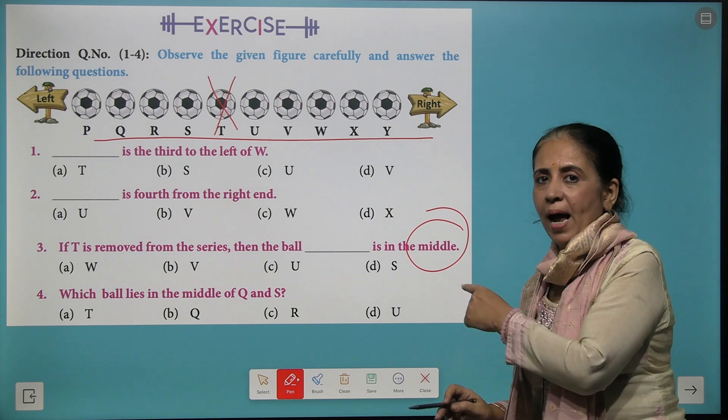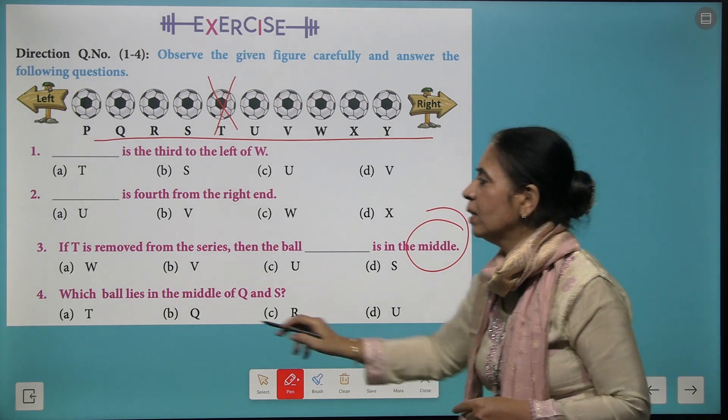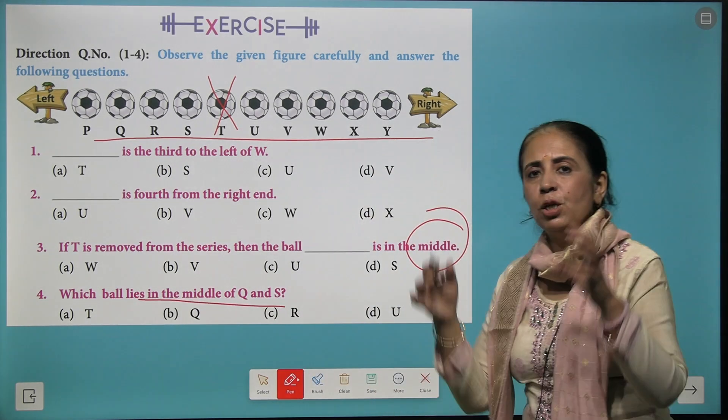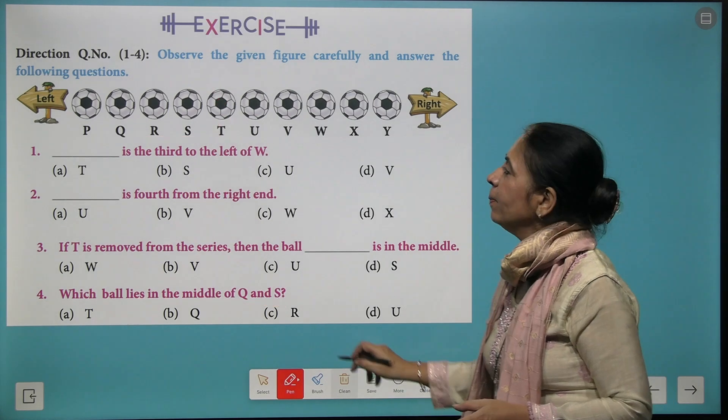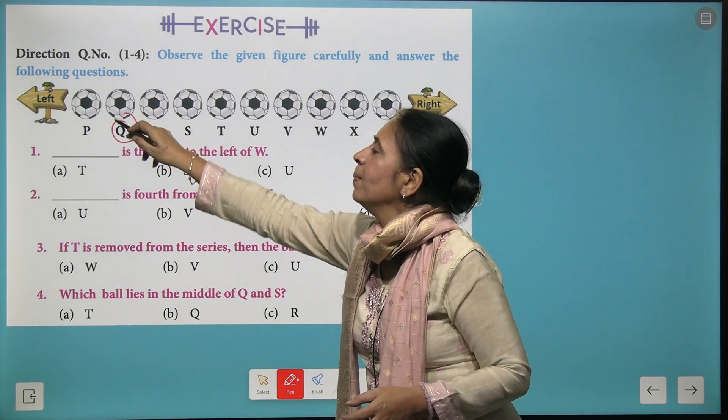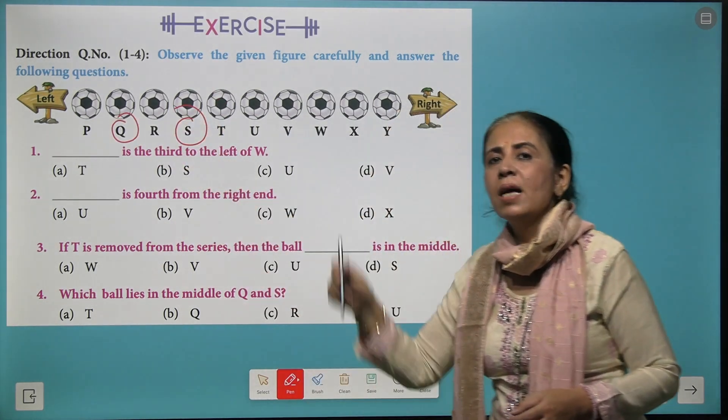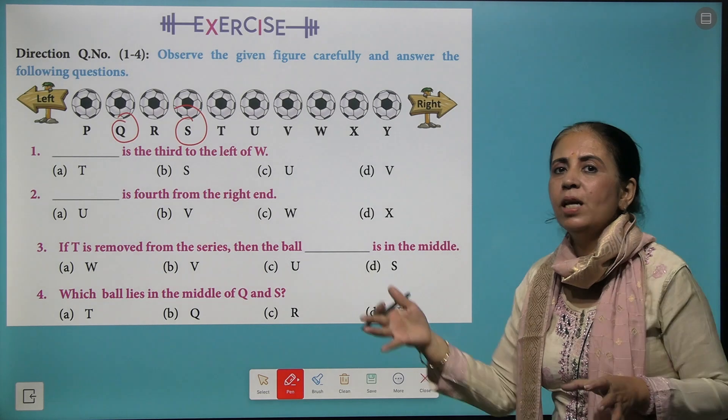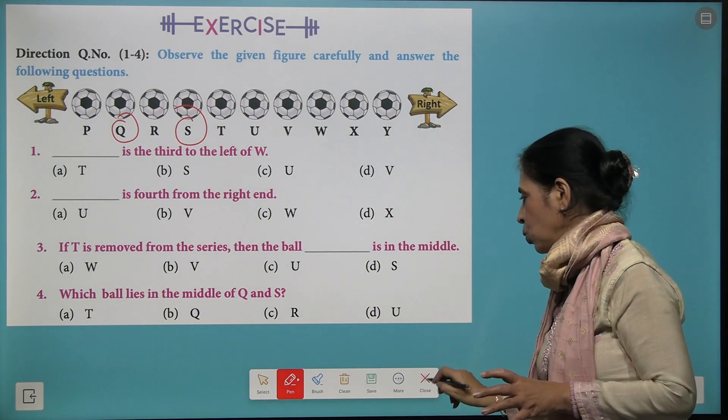Out of the remaining balls you need to find which one lies in the middle. Further, which ball lies in the middle of Q and S? You have to see where are Q and S and identify between these two balls which ball actually exists.